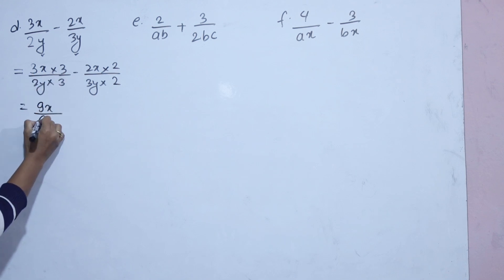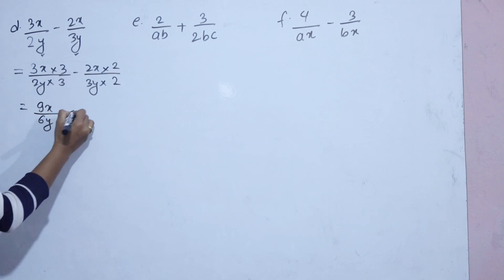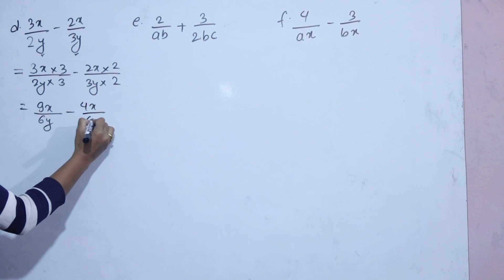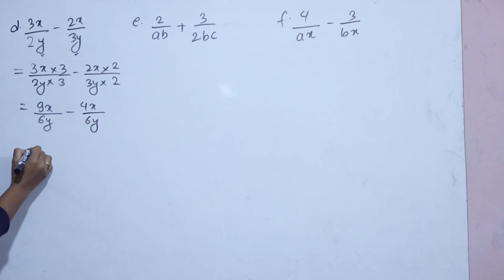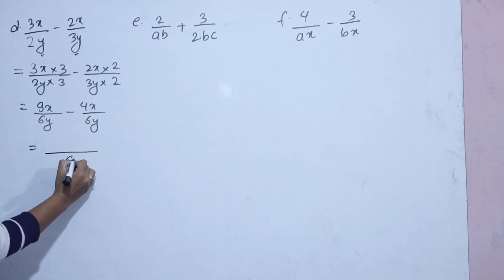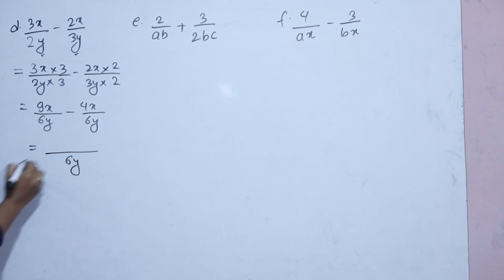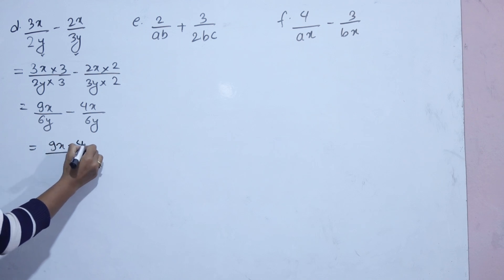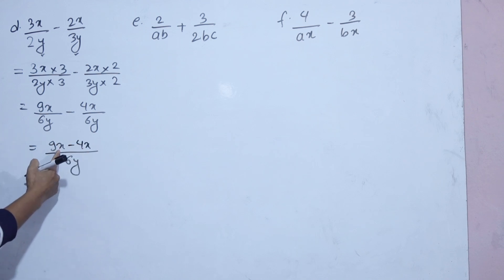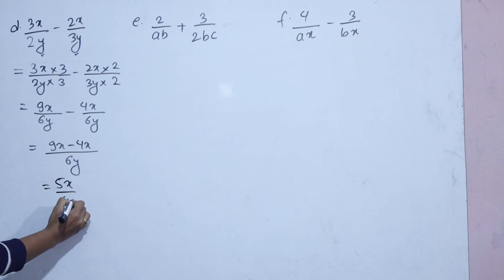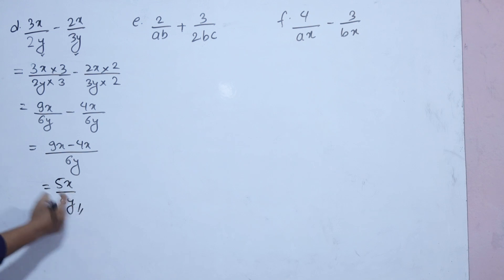Multiply to get the same denominator: 9x by 6y minus 4x by 6y. The denominator is now the same — 6y. So we get 9x minus 4x, which equals 5x by 6y.